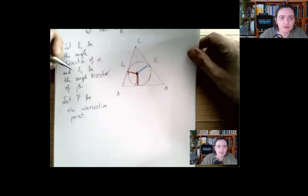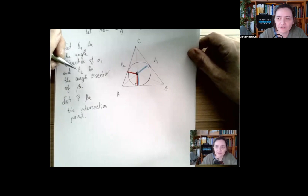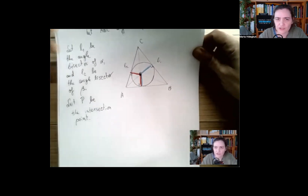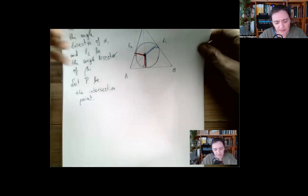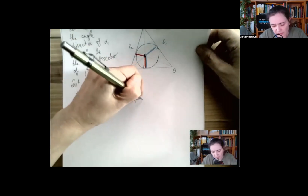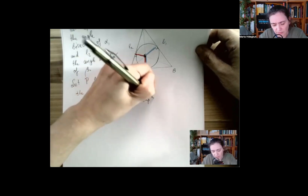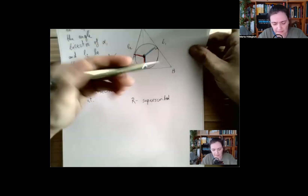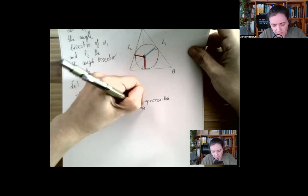Every triangle has an inscribed circle — just intersect two angle bisectors and that's the center. Then you'll have to figure out the radius. I use capital R for the radius of the circumscribed circle and little r for the inscribed circle.